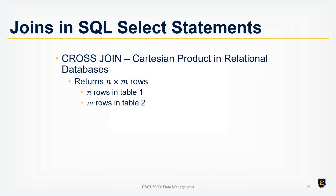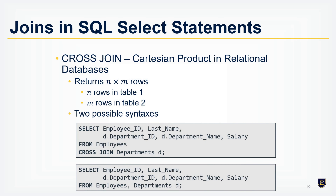The cross join returns N × M rows, where N is the number of rows in the first table and M is the number of rows in the second table. There are two equivalent SQL syntaxes: you can use SELECT employee_id, last_name, department_id, department_name, salary FROM employees CROSS JOIN departments using the CROSS JOIN keyword, or SELECT employee_id, last_name FROM employees, departments with a comma and no WHERE clause.